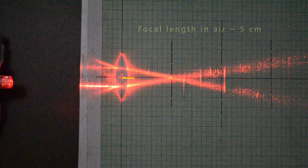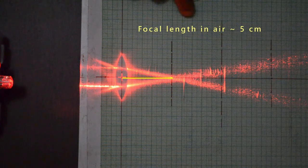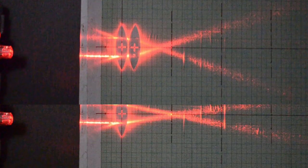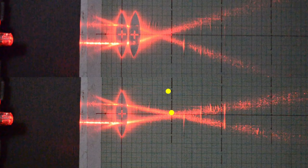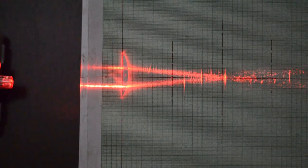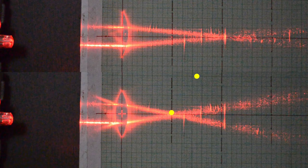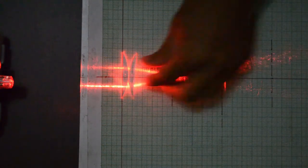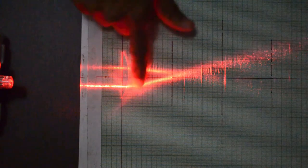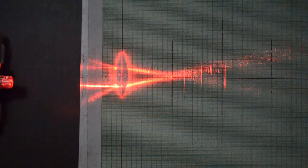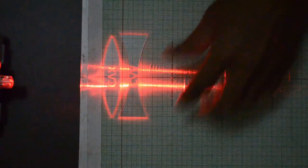We can place another convex lens next to this one and observe the combined effect. Effective focal length in this case is lower than the individual focal length of each lens. Focal length of plano-convex lens is more than that of convex lens for the same radius of curvature. Two plano-convex lenses can be placed next to each other to get the result similar to a single convex lens. You can place a concave lens next to the convex lens and study the ray paths.